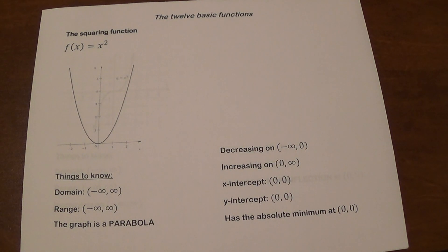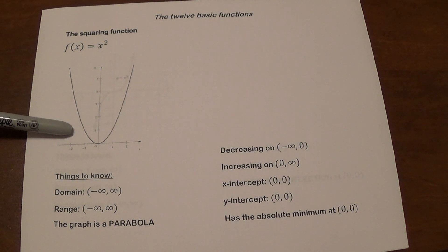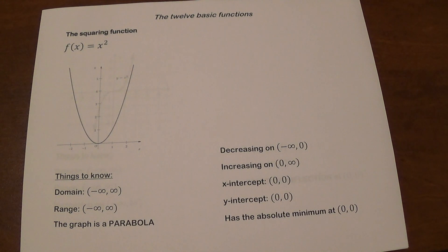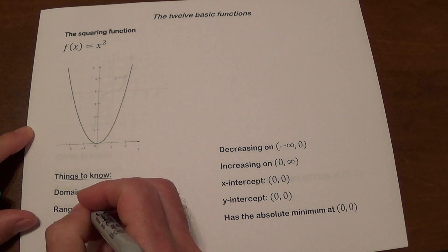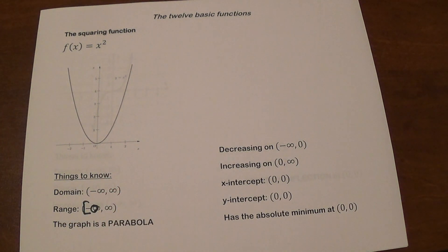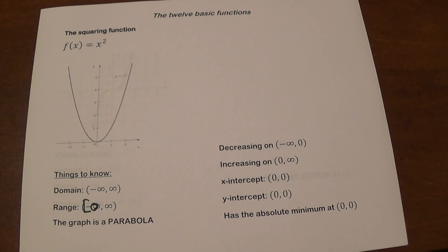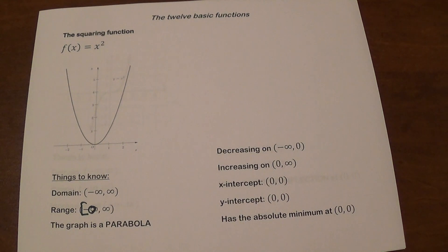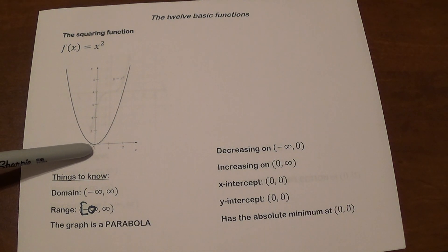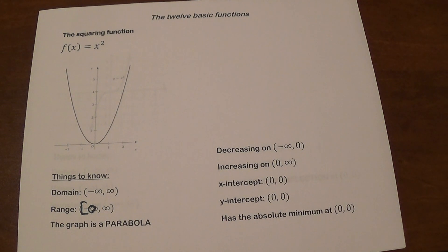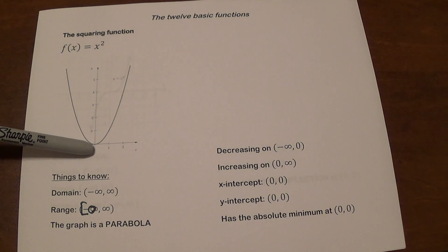Our next function is the squaring function, f of x equals x squared. So whatever x is, the y is going to be that number squared, and the graph is called a parabola. The domain is all real numbers, and the range is from 0 to infinity. This function is decreasing from negative infinity to 0, and increasing from 0 to infinity. It has its x-intercept and y-intercept at the origin, and an absolute minimum at the vertex.